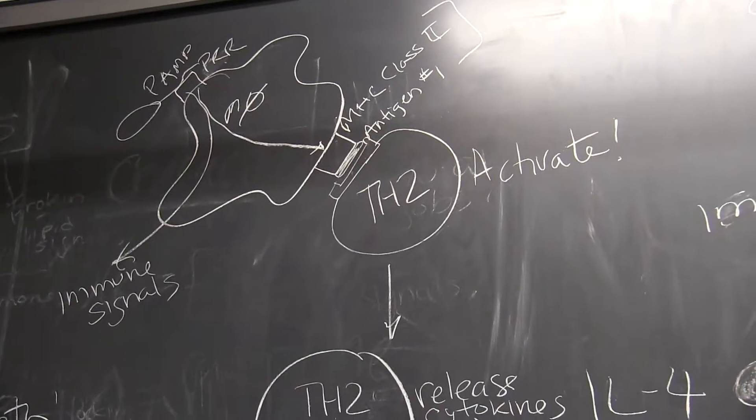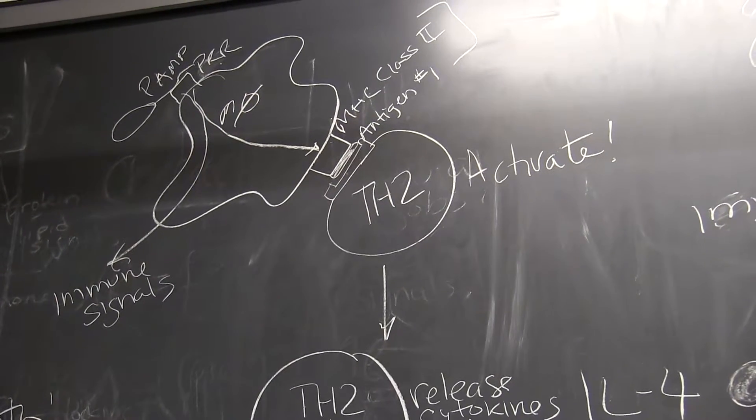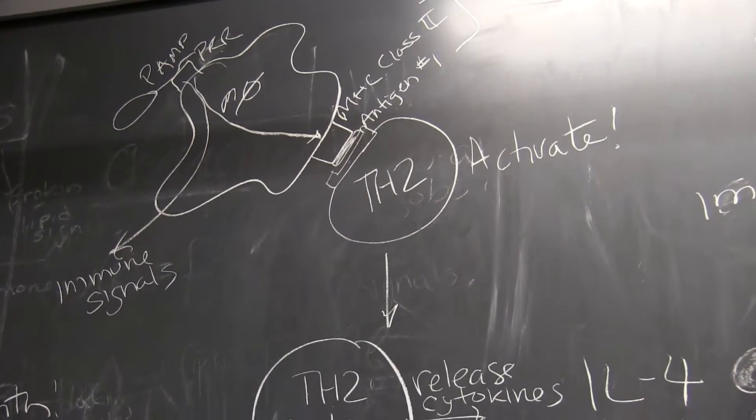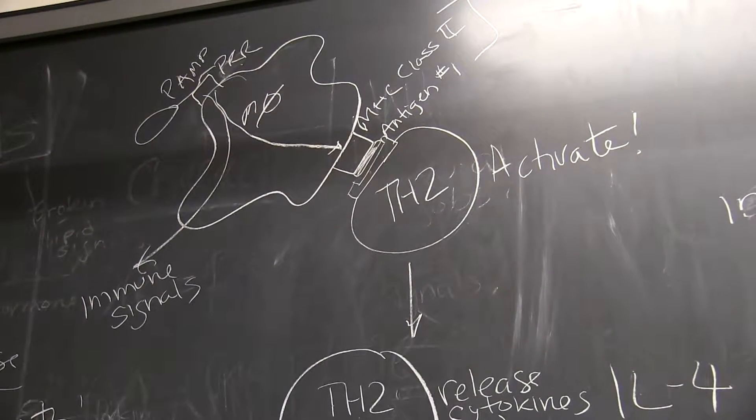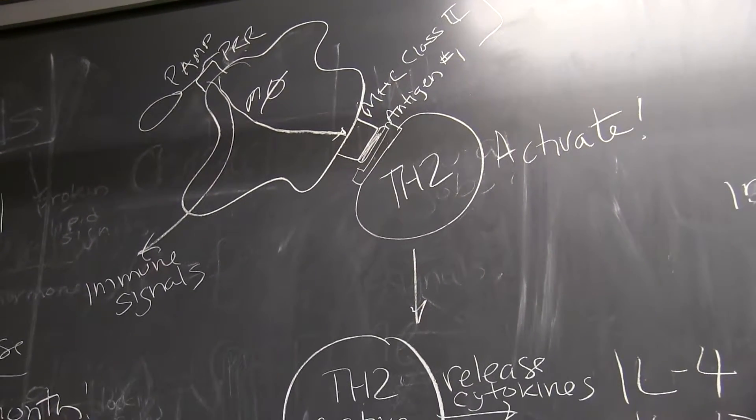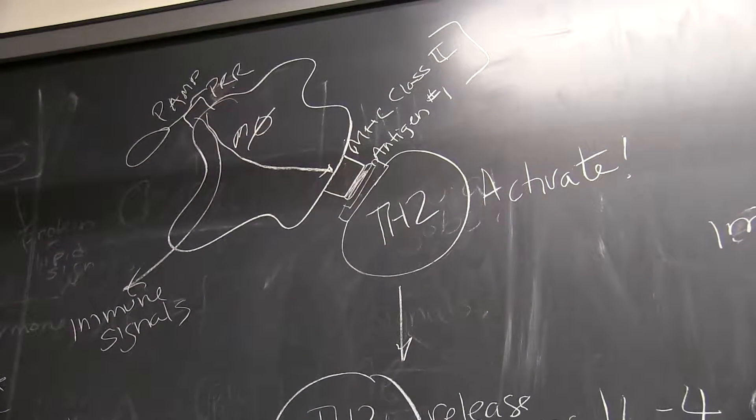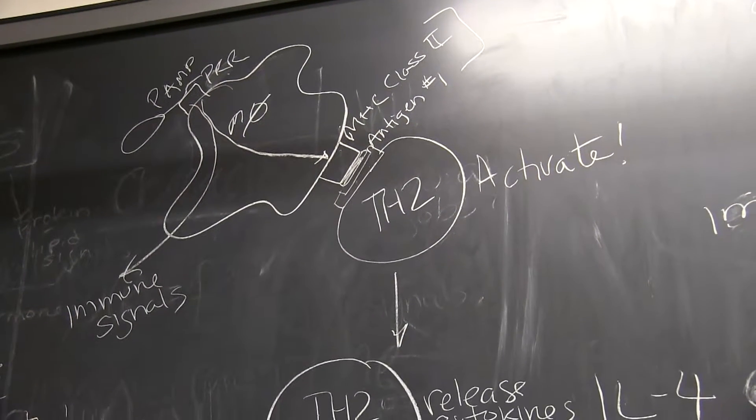We start exactly the same way as we did for the TH1 pathway. We have our PAMP, which is the flagella on our bacterium. That PAMP is recognized by a pattern recognition receptor on the surface of the macrophage.